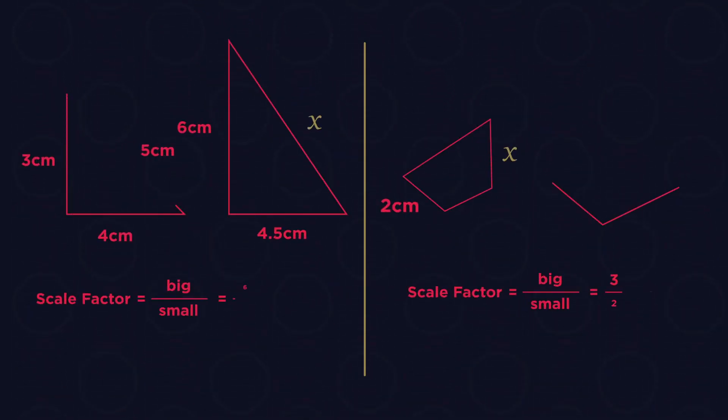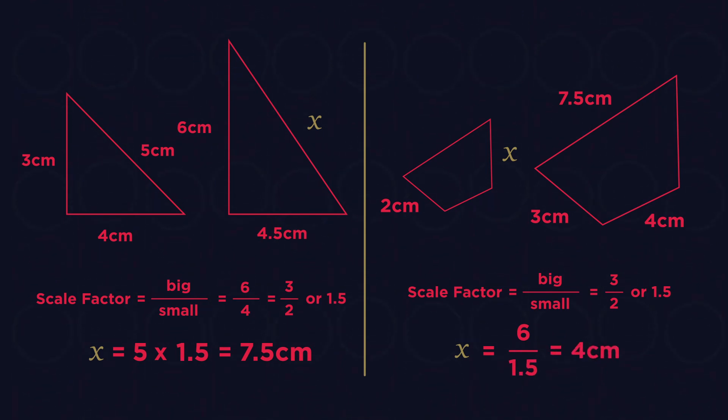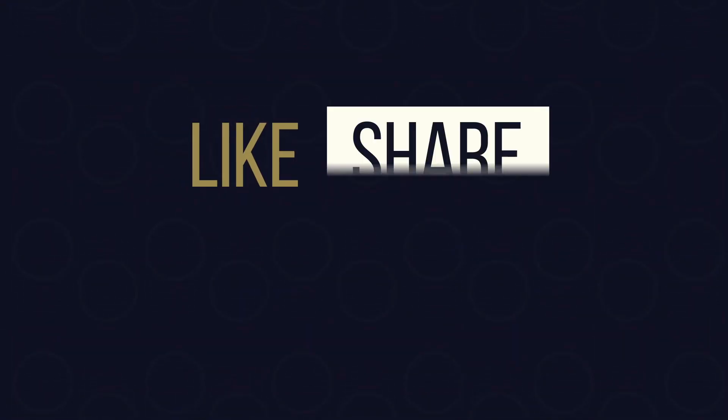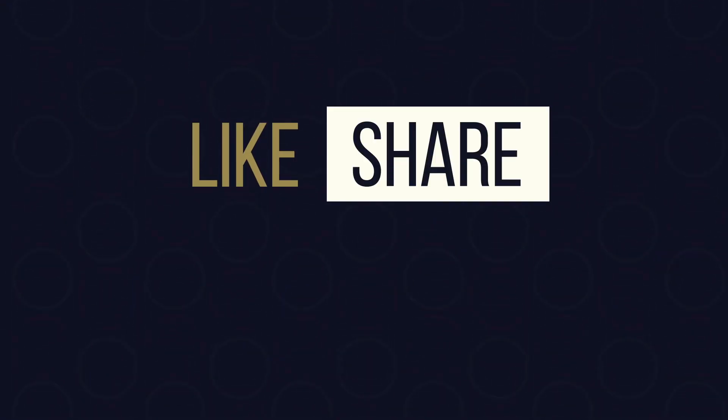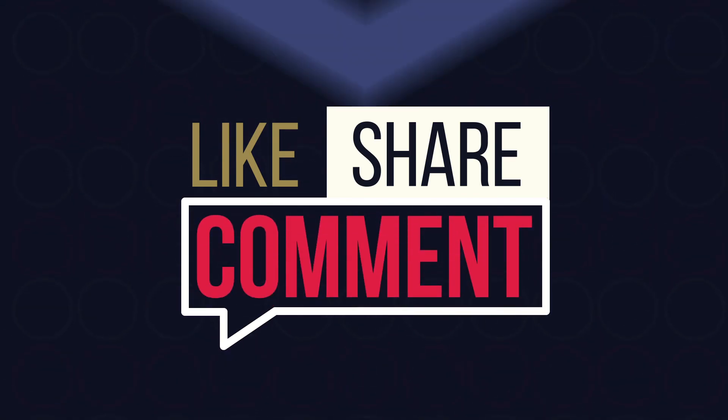So there we have calculating with similar shapes. Always start by finding the scale factor. So divide the bigger side by its corresponding smaller side. We then multiply to find a missing bigger side, or we divide to find a missing smaller side. Please like and share our videos with your friends. If you have any questions that you want help with, just comment below.